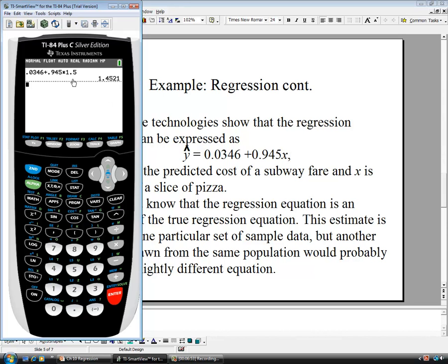So when we have a slice of pizza at $1.50, we expect that the subway token will be about $1.45. That's how we use the equation to fit values.